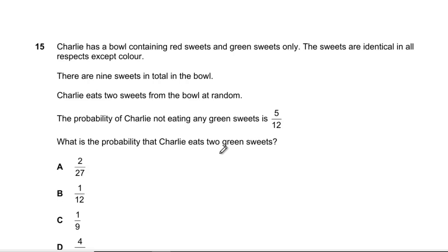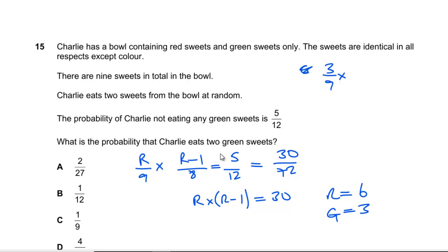Question 15: Charlie has a bowl containing red sweets and green sweets, all identical except the color. Nine sweets in the bowl, he has two at random. Probability of getting two red sweets is 5/12. So r/9 times (r-1)/8 equals 5/12. Getting it all over 72, we multiply by 6, so we've got 30/72, which means r(r-1) equals 30. So r is 6, which means g is 3. Probability of two green sweets is 3/9 times 2/8, which is 1/3 times 1/4, equals 1/12, which is B.